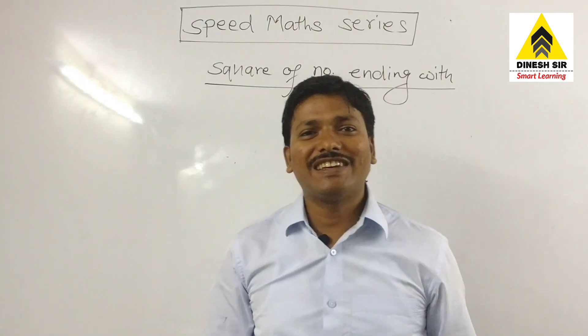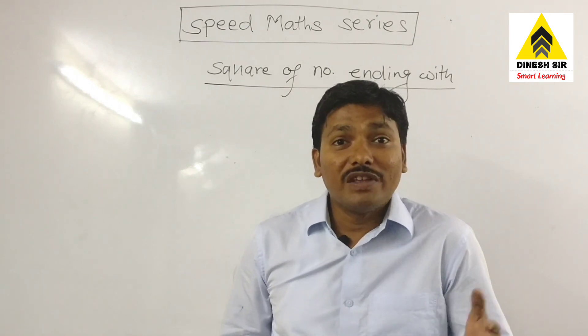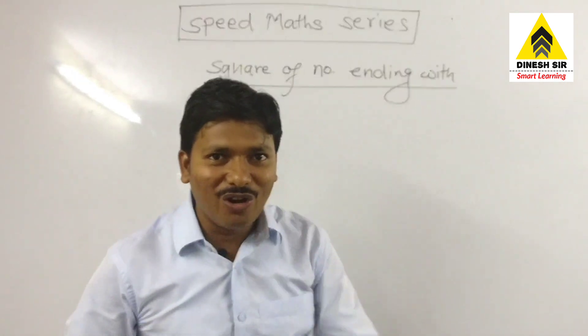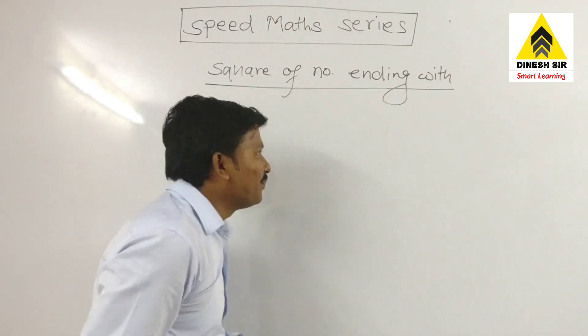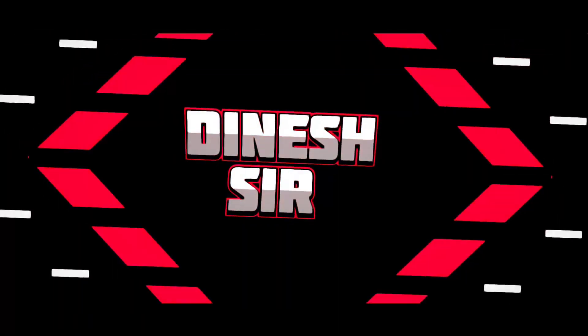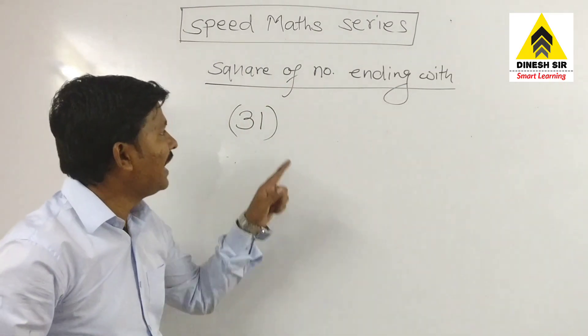Hello friends, welcome to my channel Dinesh Sir. Let's see the square of any number which is ending with one. The new trick for you all, just look here. If we have any number like this, thirty-one, which is ending with one...